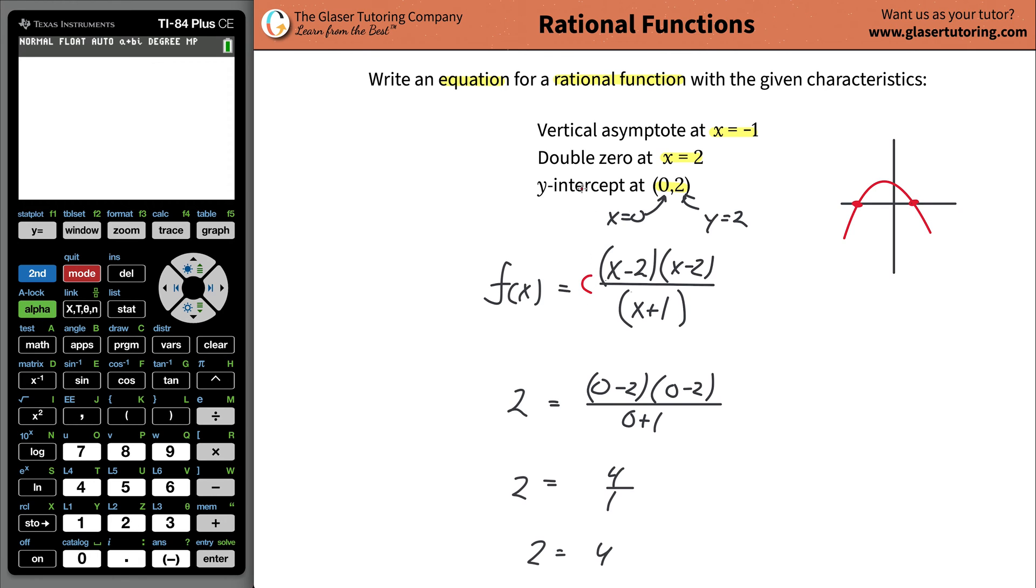What we need to do is add a coefficient in order to make this thing work. When you're taking into account the y-intercept, do exactly what I did, but just plug in a little coefficient, a little constant. Now our job is to solve for that constant. We'd have to divide four out from each side, so the constant is going to be one half. C is one half.